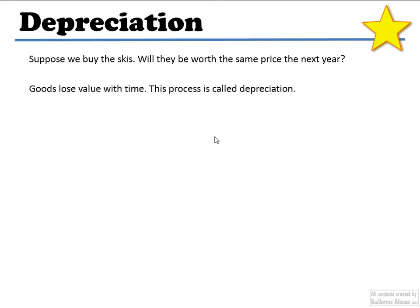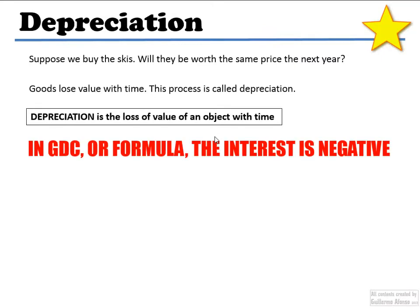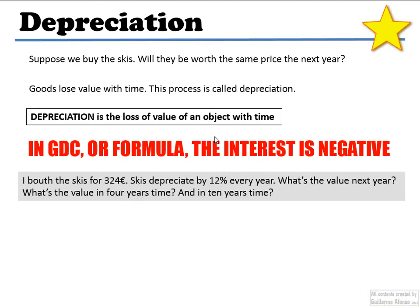The depreciation is slightly different. Like you buy something, but this is what's really going to happen to the skis. You're not going to sell them for the same amount. Why? Because they're worth less with time. With time, an object loses value. So it's going to be exactly the same thing. The only thing I'm going to have to do is put the interest negative. So if skis depreciate by 12% every year, I just have to go in the interest percentage and put minus 12. That's the only thing I'm really going to have to change.